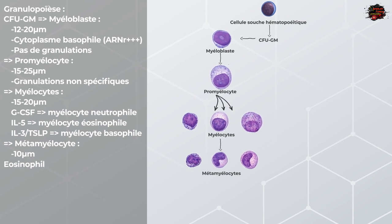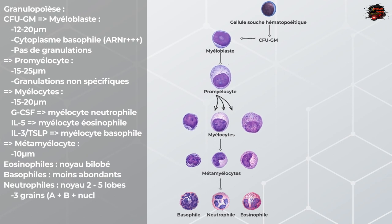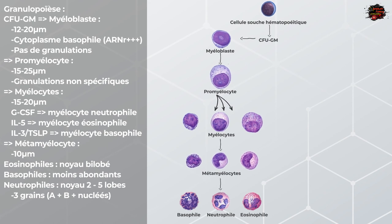On aura les éosinophiles, qui auront des noyaux bilobés et seront colorés en rouge à l'ajout de l'éosine. Les basophiles sont les moins abondantes. Les neutrophiles ont un noyau qui a entre 2 et 5 lobes, et trois types de grains : les grains de type B, spécifiques aux neutrophiles ; les grains de type A, non spécifiques ; ainsi que les granulations tertiaires, qui sont les plus rares. Il est à noter que les granulocytes étaient dénommés les polynucléaires, car la lobulation du noyau avait poussé les biologistes et médecins de l'époque à penser qu'elles avaient plusieurs noyaux. Mais cette dénomination est obsolète et ne devrait plus être utilisée.